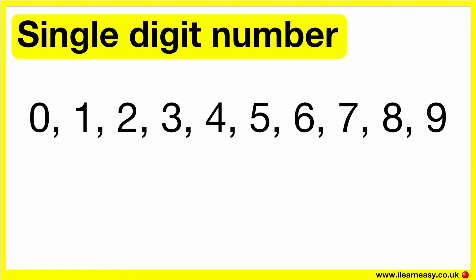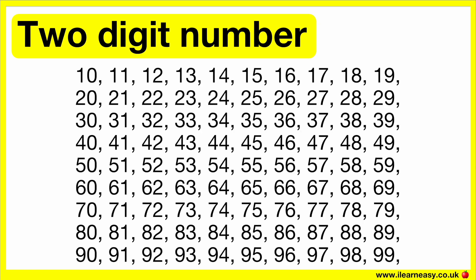Each number has a value. The place value refers to how much a digit is worth, or the value of that digit depending on where it is in a number. A single digit number is any number between 0 to 9, including 0, 1, 2, 3, 4, 5, 6, 7, 8 and 9. The single digit number with the least value is 0 and the most value is 9. A two digit number is any number between 10 and 99. The two digit number with the least value is 10 and the most value is 99.